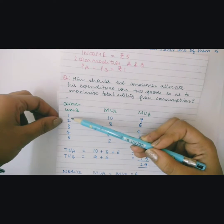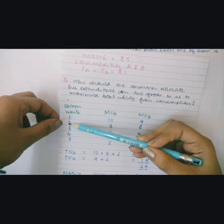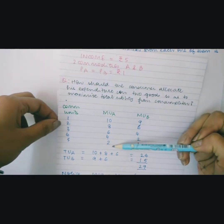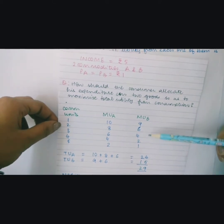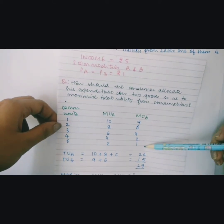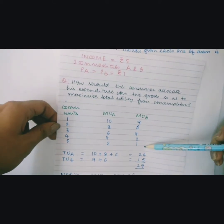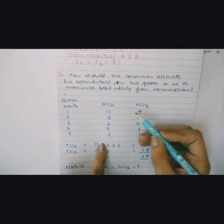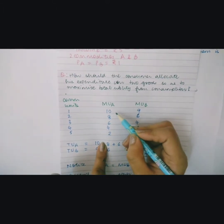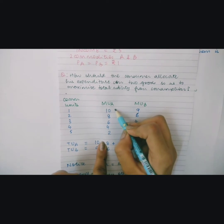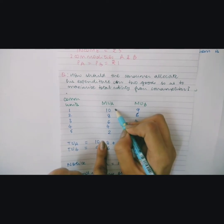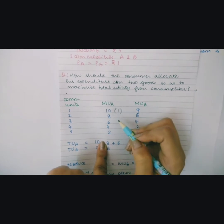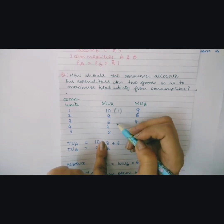The table shows commodity units 1, 2, 3, 4, and 5, with corresponding marginal utility from consumption of commodity A and marginal utility from consumption of commodity B. When you have a money income of 5 rupees, the maximum marginal utility you get is from the consumption of the first unit of commodity A.